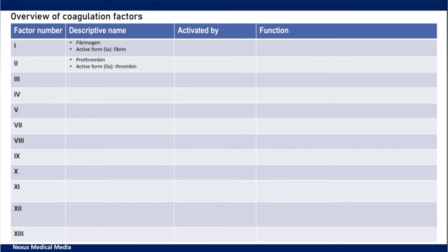Factor 2 is prothrombin and the active form is thrombin. Factor 3 is tissue factor. Factor 4 is calcium. Factor 5 is labile factor or proaccelerin. Factor 6 is not there.